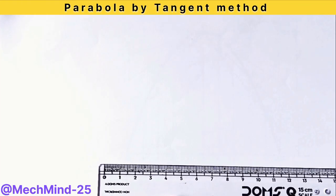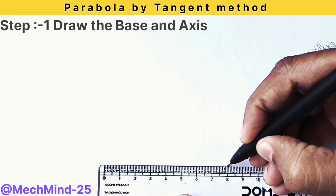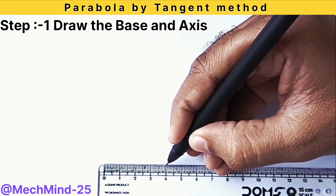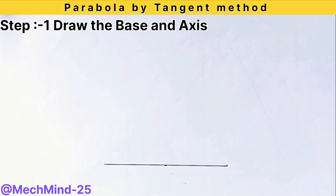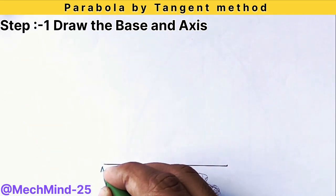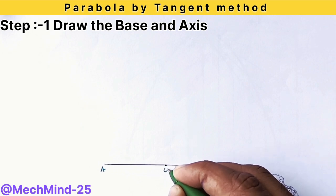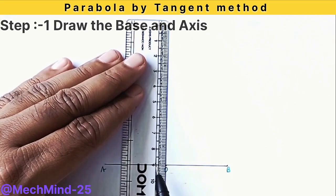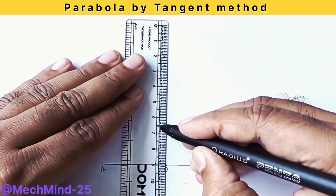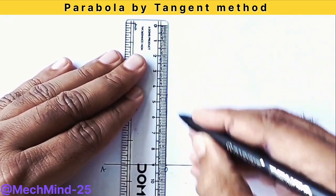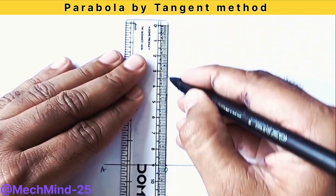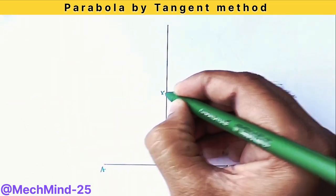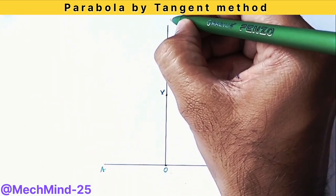First step is draw the base and axis. Take a ruler and draw a horizontal line of 80 mm. Mark its midpoint. Mark the end points as A and B and midpoint as O. Through the point O draw a vertical line measuring 45 mm — this will represent the axis of the parabola. Extend this line upward equal to the length of the axis. Mark this point as V and label the top point as C.